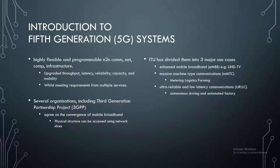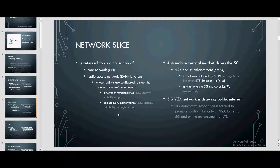Several organizations, including 3GPP, agree on the convergence of mobile broadband so that physical infrastructure can be accessed using network slices. ITU has divided them into three major use cases: enhanced mobile broadband (eMBB), massive machine type communications (MMTC), and ultra-reliable and low latency communications (URLLC).